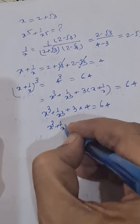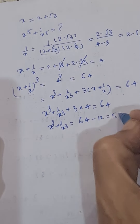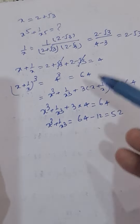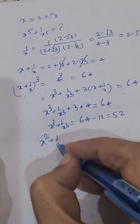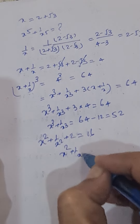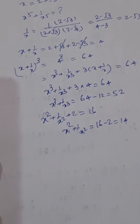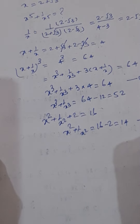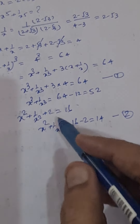So x cube plus 1 upon x cube equal to 64 minus 12, equal to 52. Now, since we know x plus 1 upon x, we square it to get x square plus 1 upon x square plus 2 equal to 16, so x square plus 1 upon x square equal to 16 minus 2, equal to 14. Let's call this equation 1 and this equation 2.